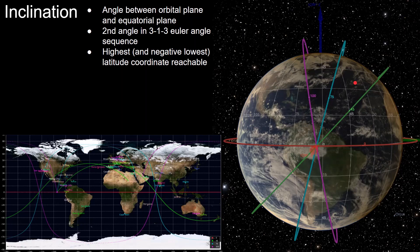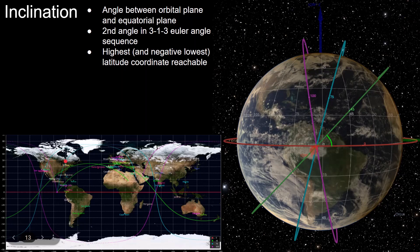We'll start with orbital inclination, the most straightforward to visualize. Orbital inclination is the angle between the equatorial plane and the orbital plane. The red orbit has an inclination of 0 degrees, meaning it is always above Earth's equator, visible in its ground track as a straight line at latitude 0 degrees. A 45-degree inclination orbit has a clearly visible 45-degree angle between itself and the equatorial plane, and we can read the inclination from a ground track by observing the highest latitude the orbit reaches — in this case, 45 degrees.